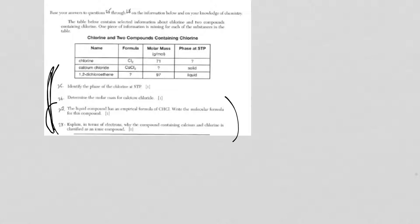Alright, so let's take a look. For question 25, you're asked to identify the phase of chlorine at STP. Of course, chlorine, while it has a molar mass of 71, is a gas at STP.